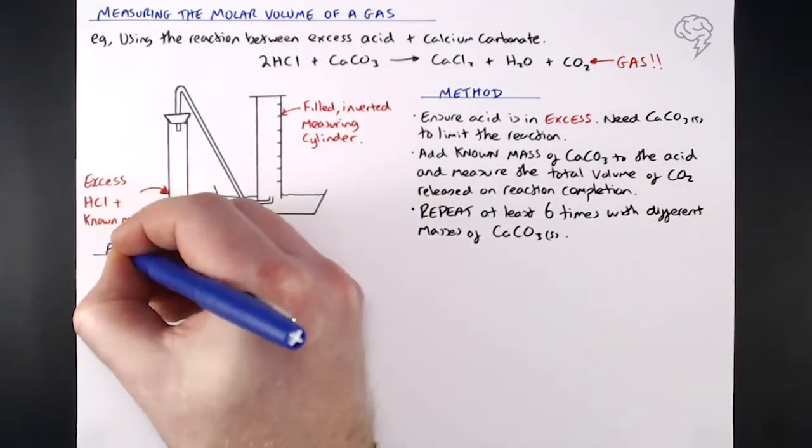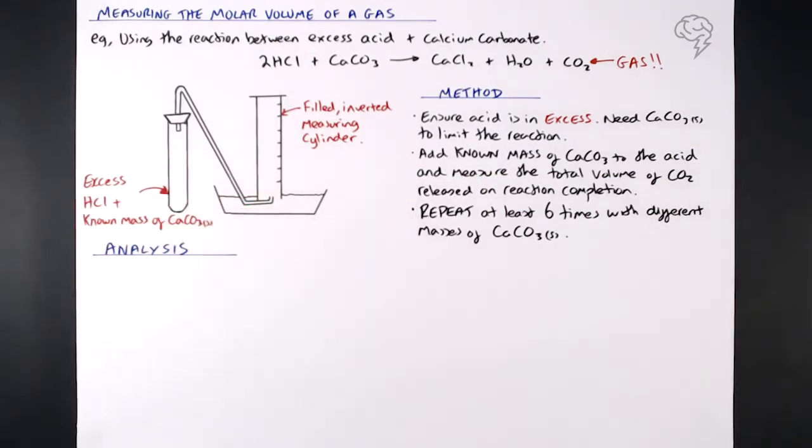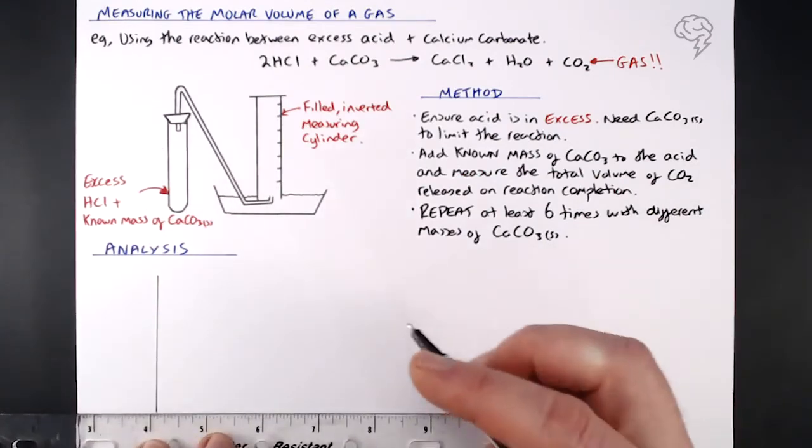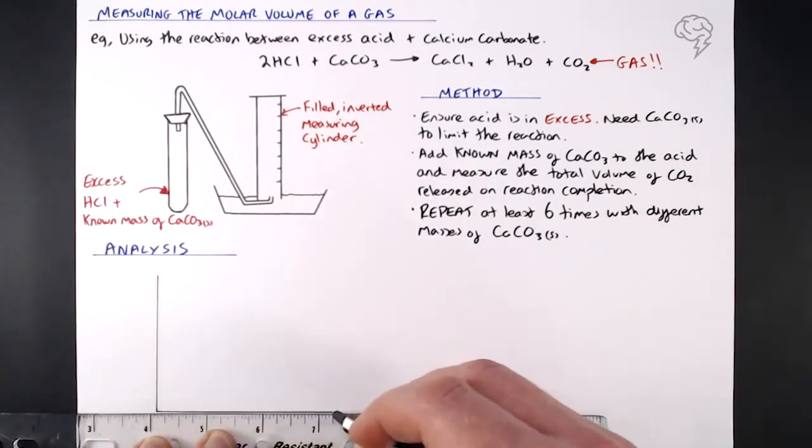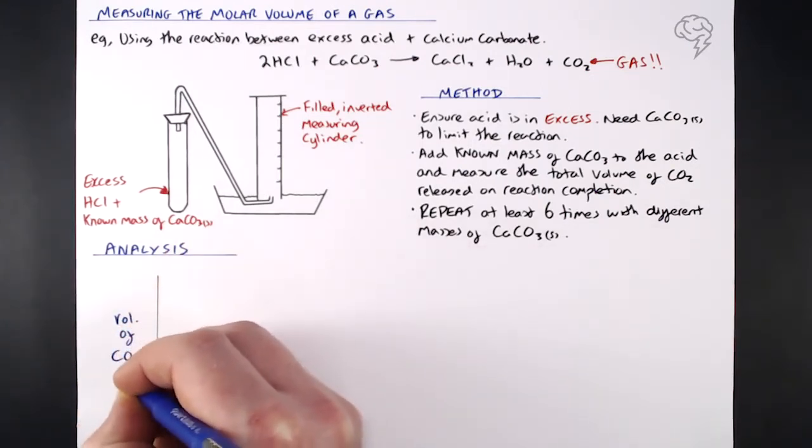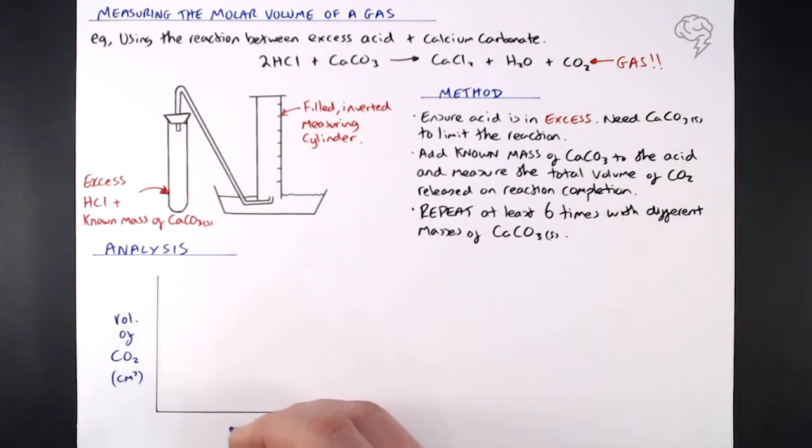All the while ensuring that our acid is in excess. We want that calcium carbonate to run out, and for the reaction to stop when the calcium carbonate runs out. By changing the mass of that calcium carbonate ever so slightly, you're only dealing with small masses here, and then making sure you jot those down in a results table. And what we can do is analyze those results. Once we've got our results, in terms of analysis, what we need to do is plot a graph. Our graph, very straightforward. We've got two axes. Our y-axis, that's what we're measuring, that's the volume of CO2 given off by each separate experiment.